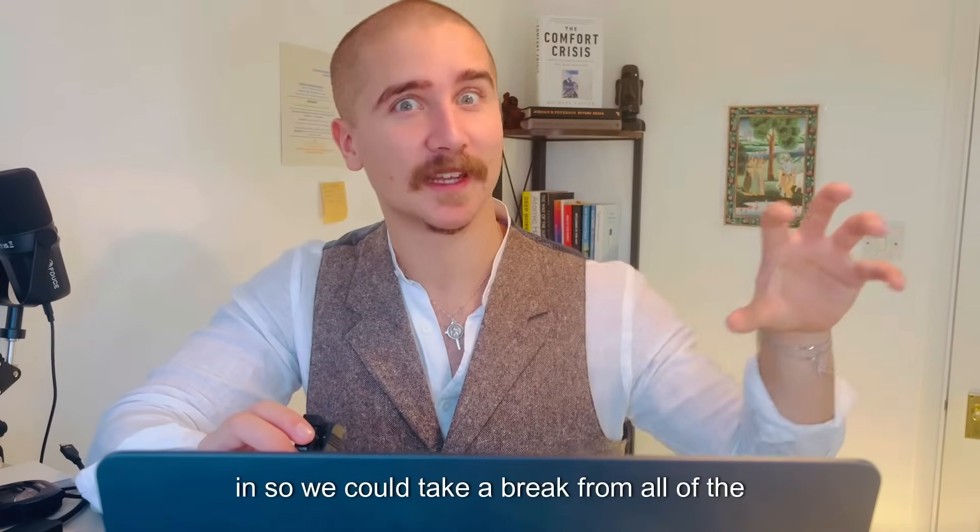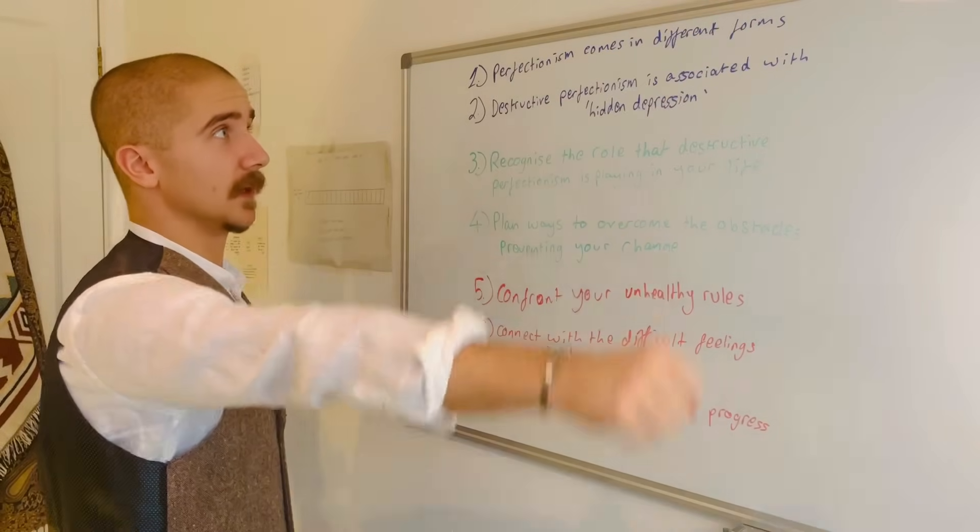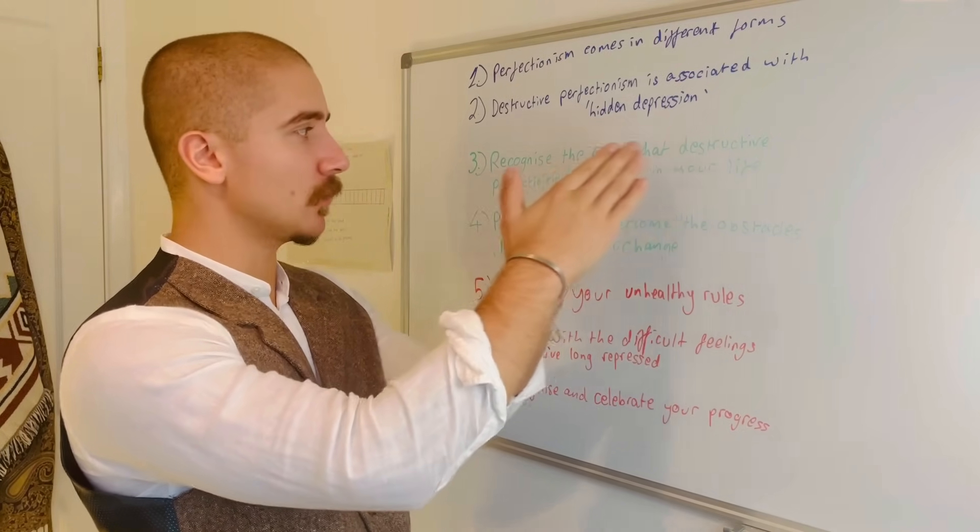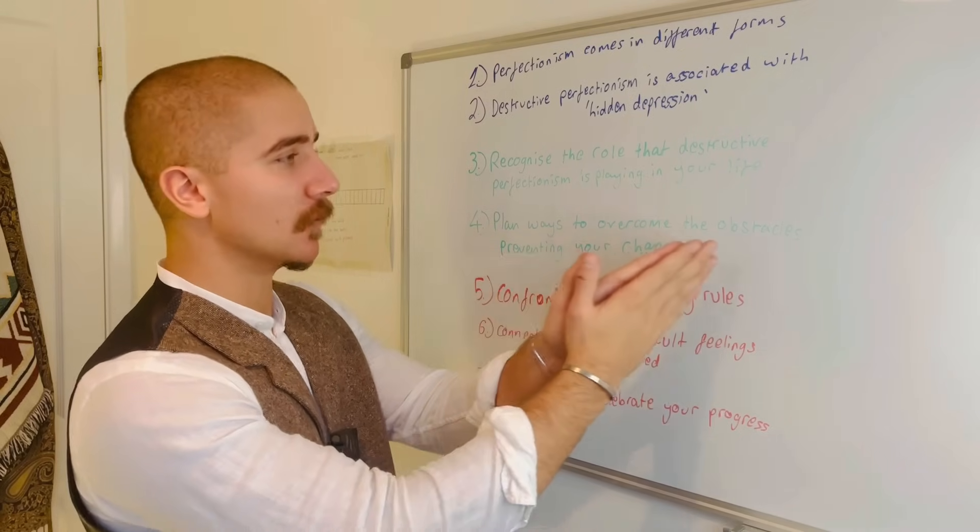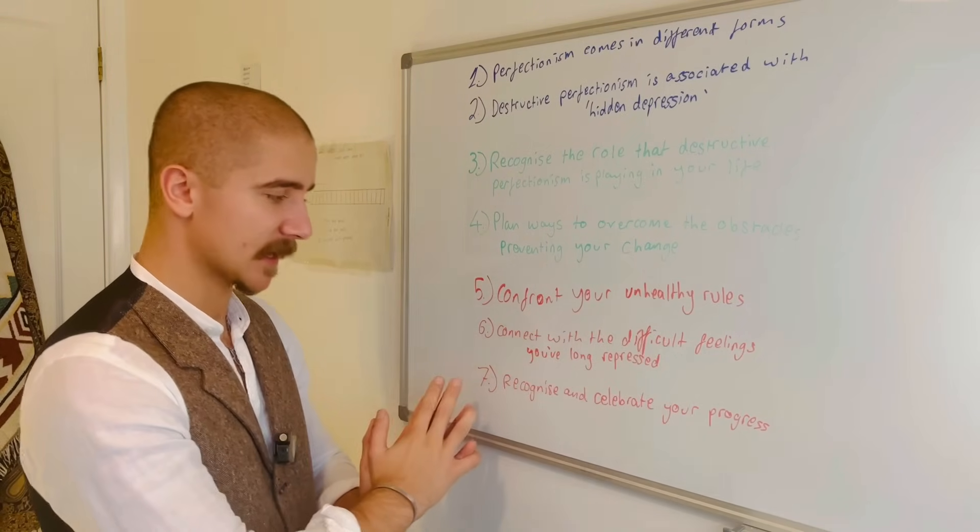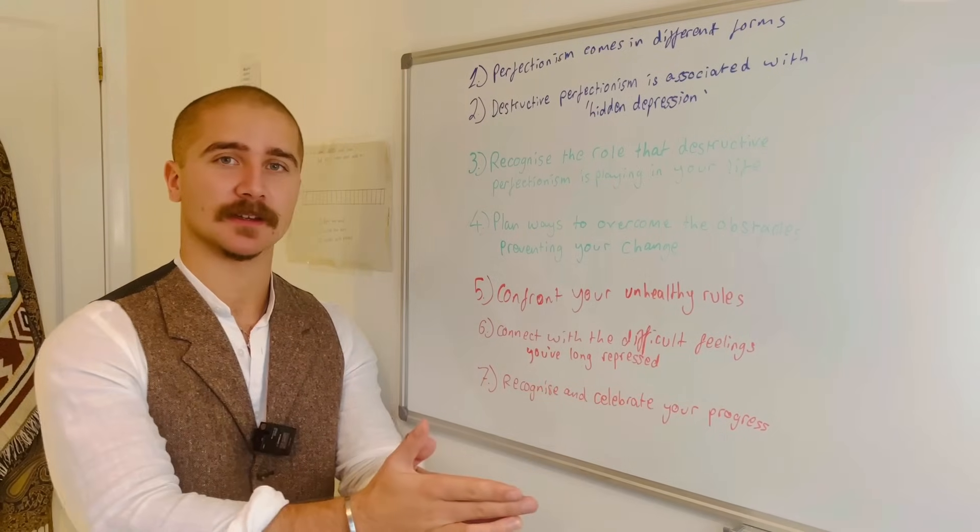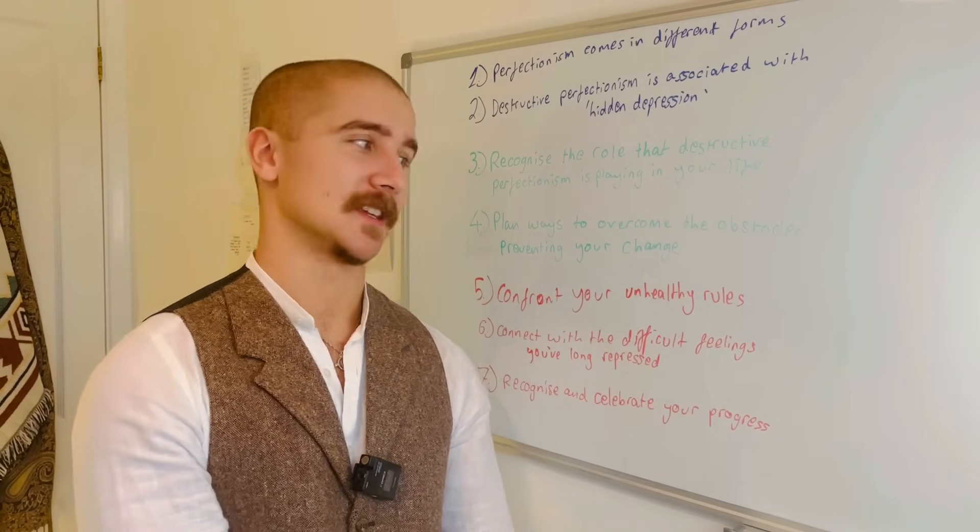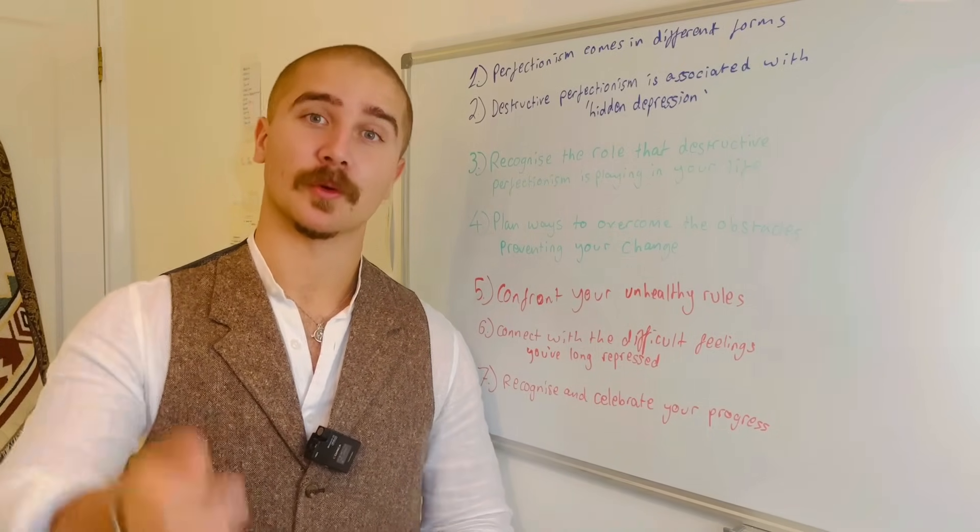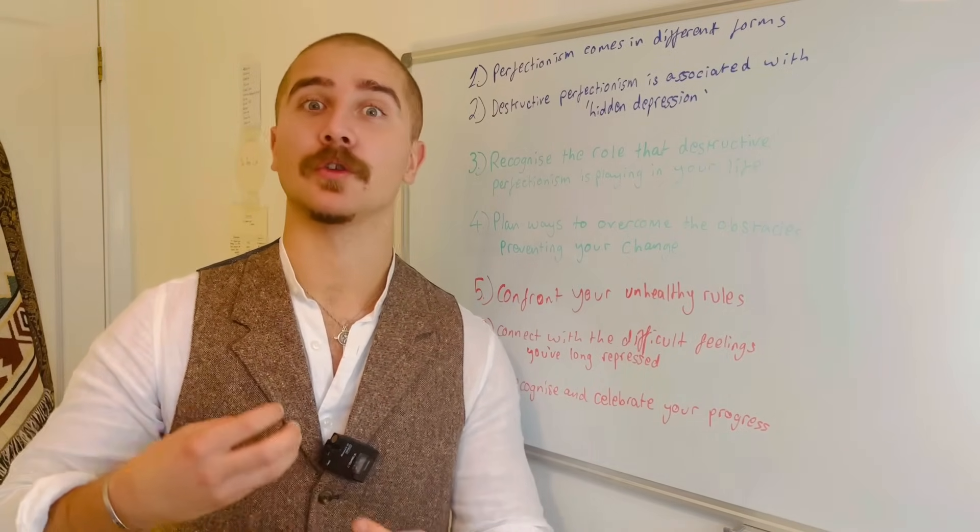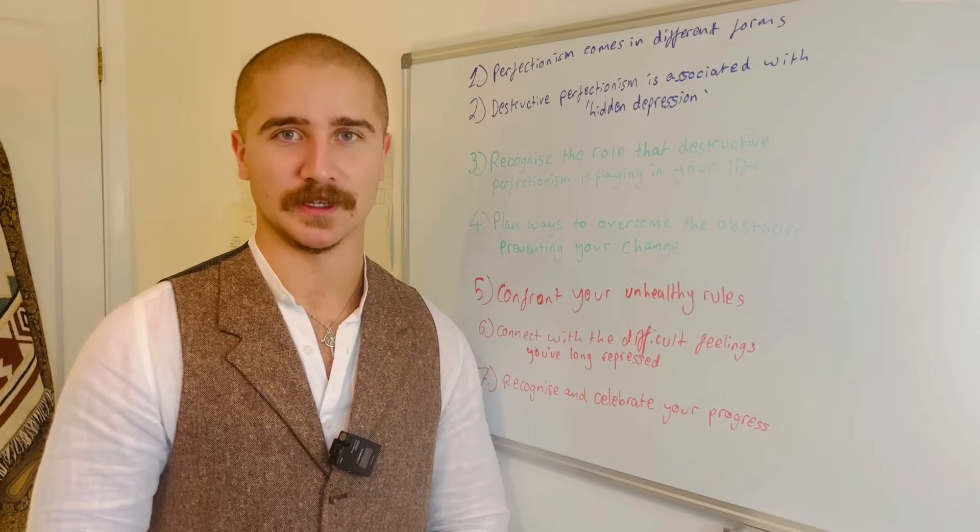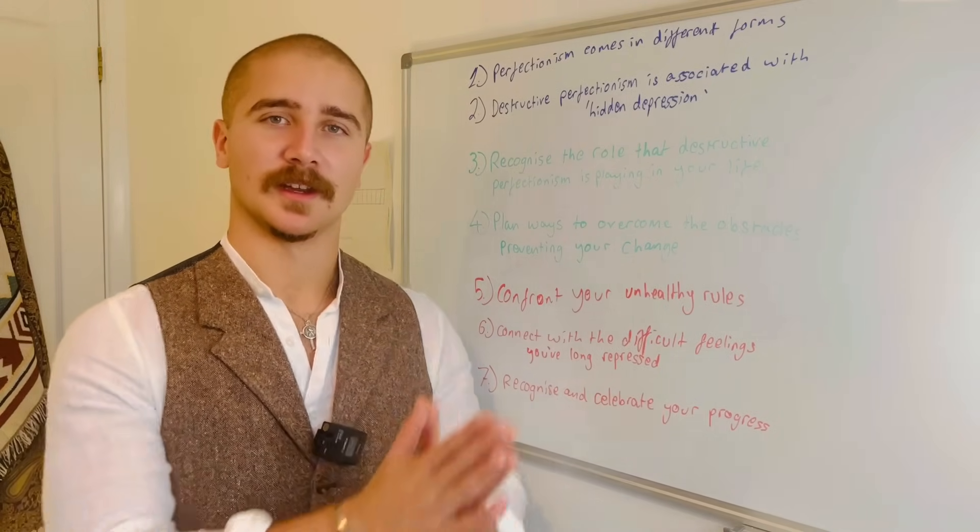Back to the board. In summary, perfectionism comes in different forms. Destructive perfectionism is associated with hidden depression. To conquer your perfectionism: recognize the role that destructive perfectionism is playing in your life, plan ways to overcome the obstacles that are preventing your change, confront your unhealthy rules, connect with the difficult feelings you've long repressed, and finally, recognize and celebrate your progress. Thank you very much to Margaret Rutherford for her continued work on this incredibly dense and intriguing topic. And finally, thank you to you for your time and attention. Drop a comment about how you've struggled with perfectionism, if you're struggling right now, or how you've overcome it. Share with us anything that you disagree with, agree with, or something that has helped you overcome perfectionism. In the meantime, stay disciplined, playful and dangerous. Adios muchachos y muchachas.